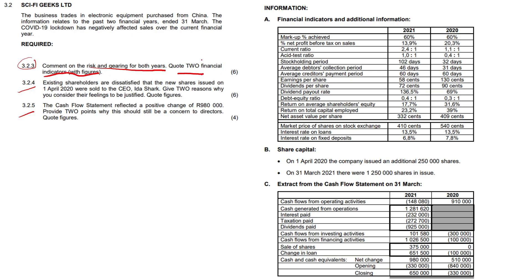Let's focus on the information sheet on the question paper, looking more specifically at the debt equity ratio. The debt equity ratio seeks to explain the relationship between debt and equity — more simply put, between loans and own capital, or borrowed capital versus own capital. Last year the ratio was 0.3 to 1, which meant that for every one rand invested as owners or shareholders, we borrowed 30 cents. That looks like a decent ratio.